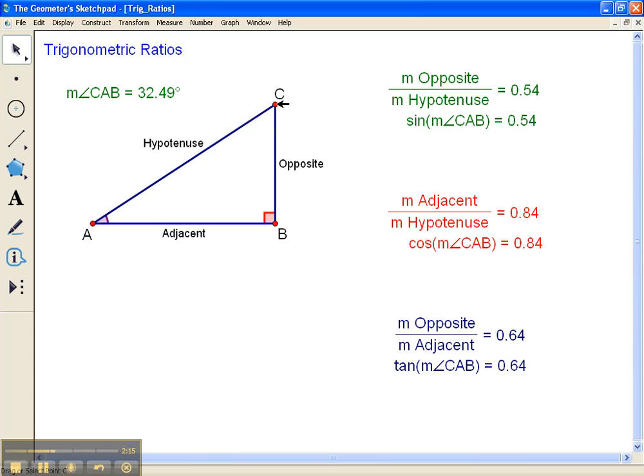Okay so notice about this right triangle if I move C it changes the angle and when I change the angle all of these ratios change as well.